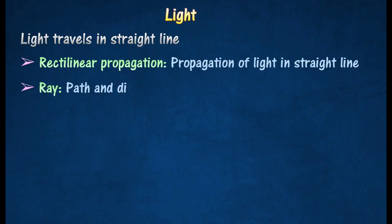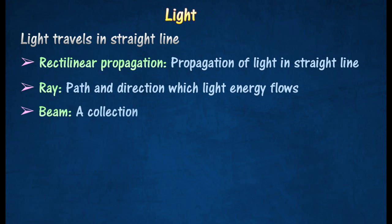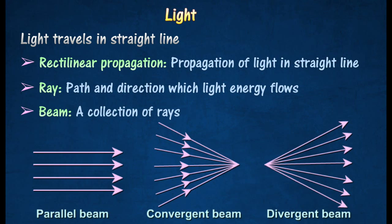A ray is the direction or path along which light energy flows. In a diagram, rays are represented by lines with arrowheads. A collection of rays is called a beam. A beam may be parallel, convergent, or divergent.